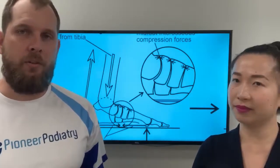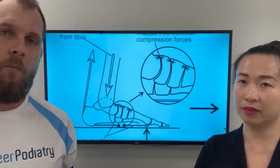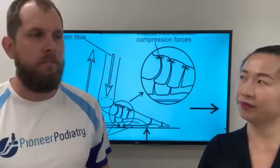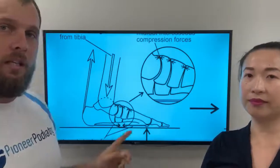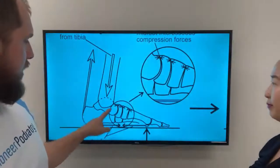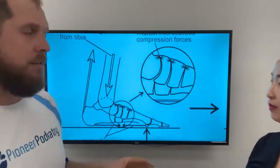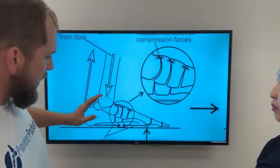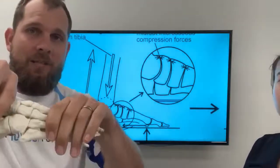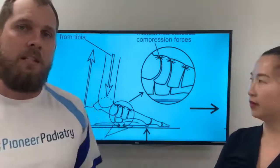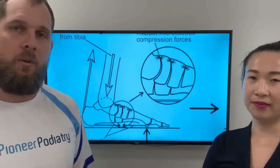In combination with orthotic therapy to prevent the midfoot collapsing, we need to look at the relationship between the muscles — length and strength. If there's excessive tension in the Achilles tendon through the calf muscles and they're tight, it's going to cause the calcaneus to plantarflex, which is going to increase that compression at the midfoot. So definitely working on calf stretches — that's really important.